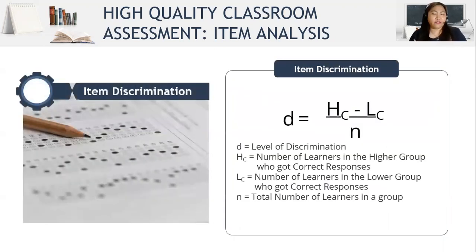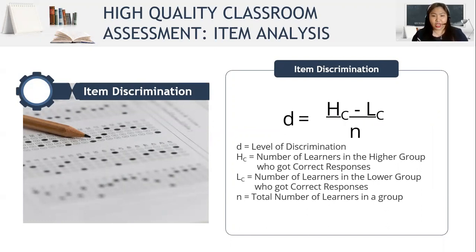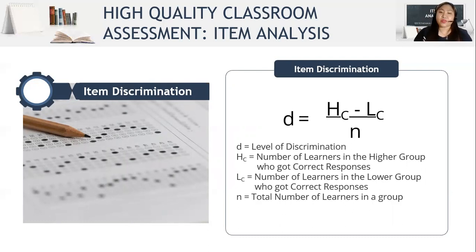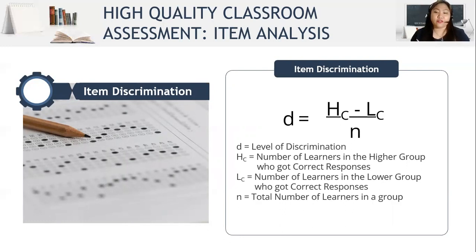Here is the formula for item discrimination. D = (HC - LC) / N, where D is the level of discrimination, HC is the number of learners in the higher group who got the correct response, LC is the number of learners in the lower group who got the correct response, and N is the total number of learners in the higher group. During the demonstration, we will see how these will be used.